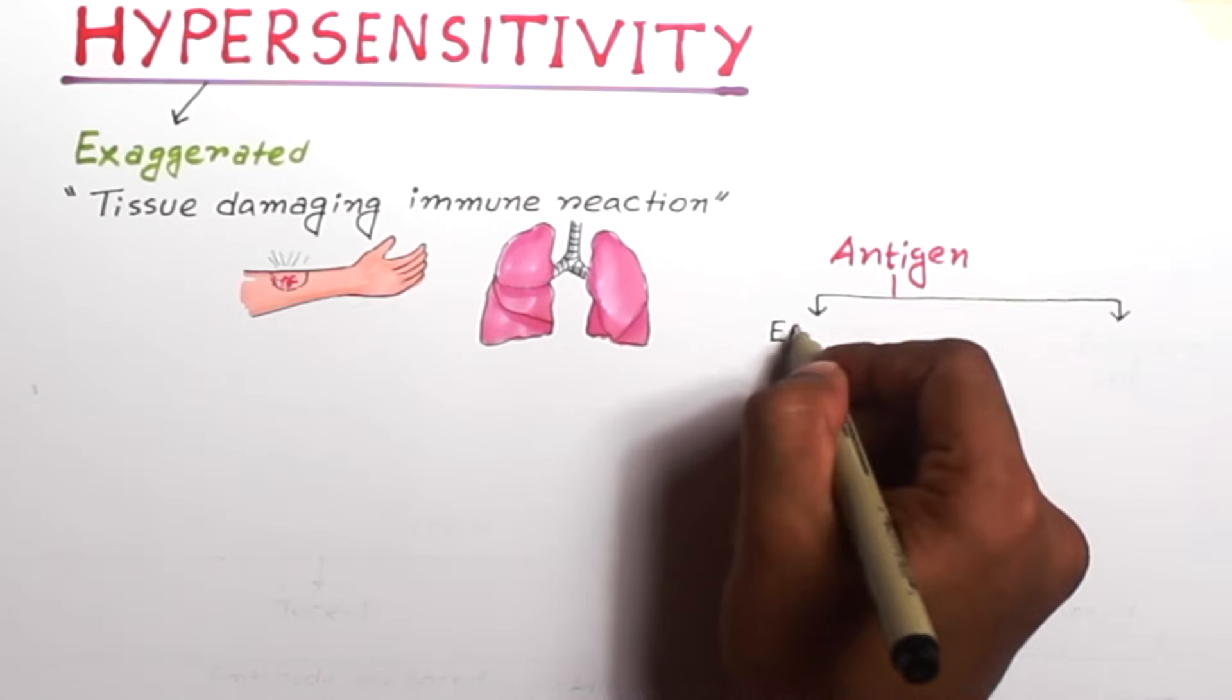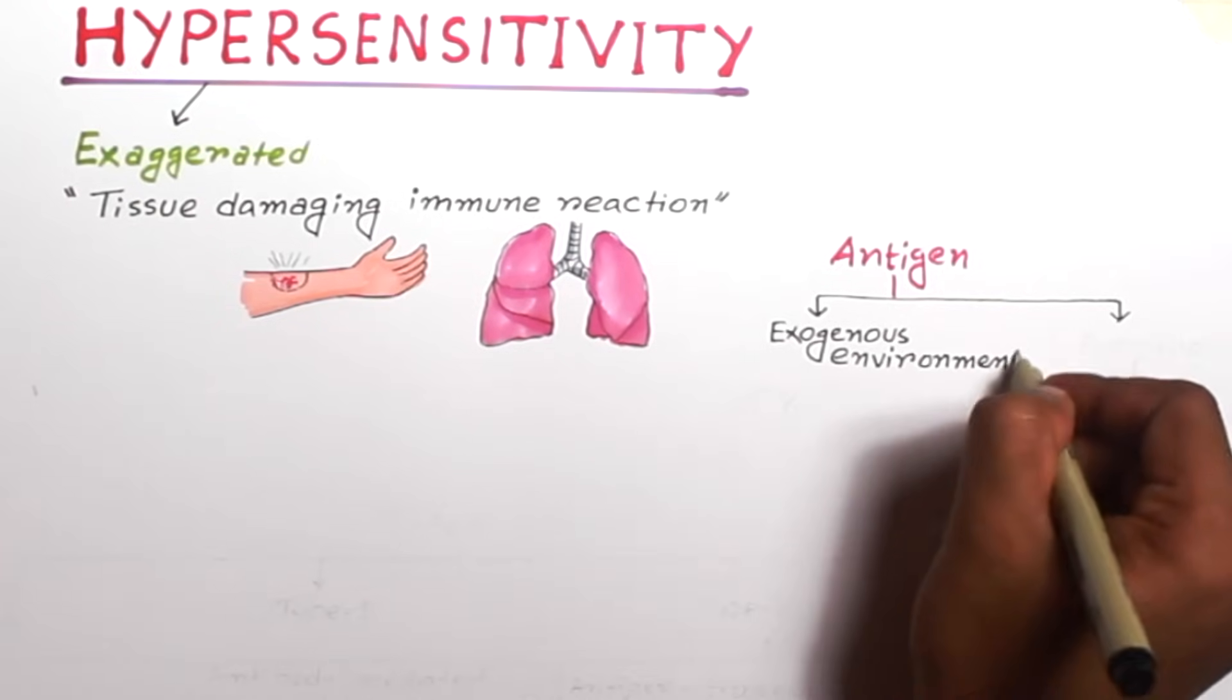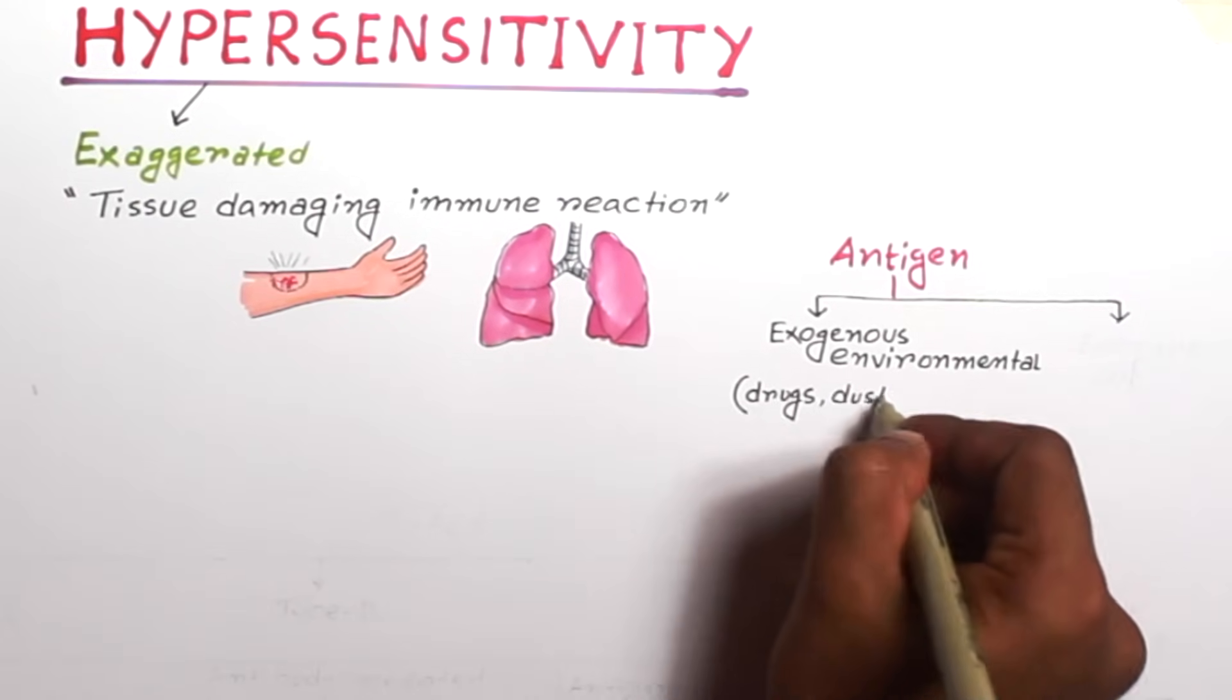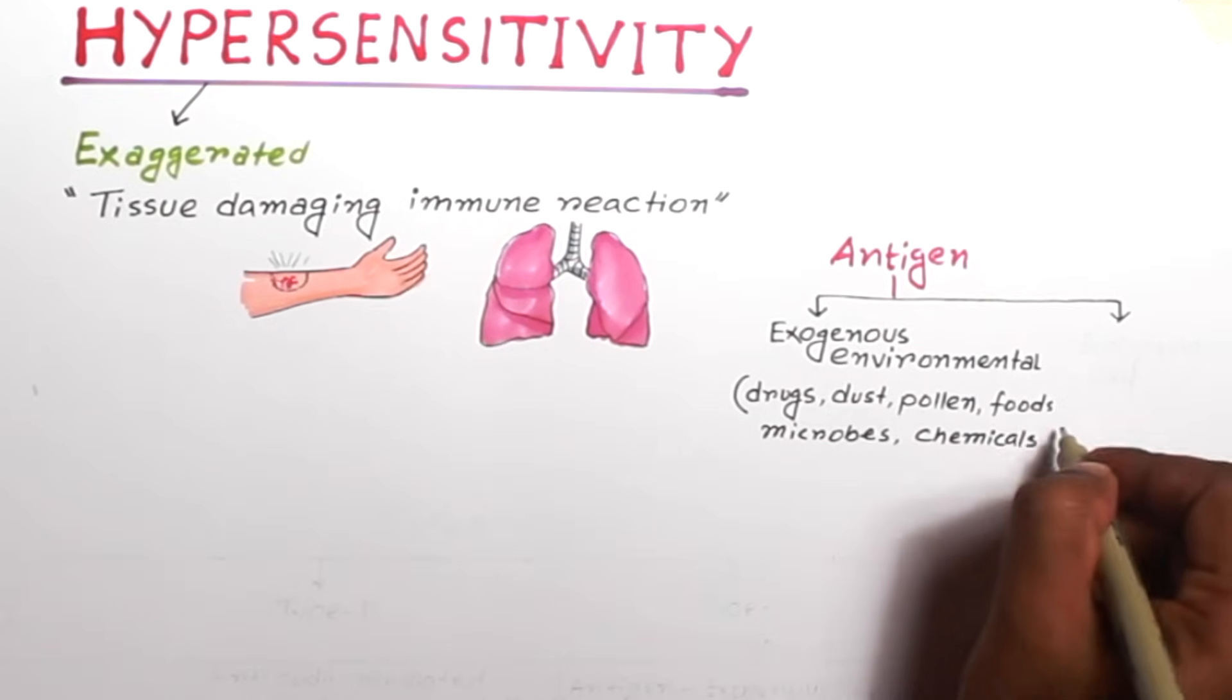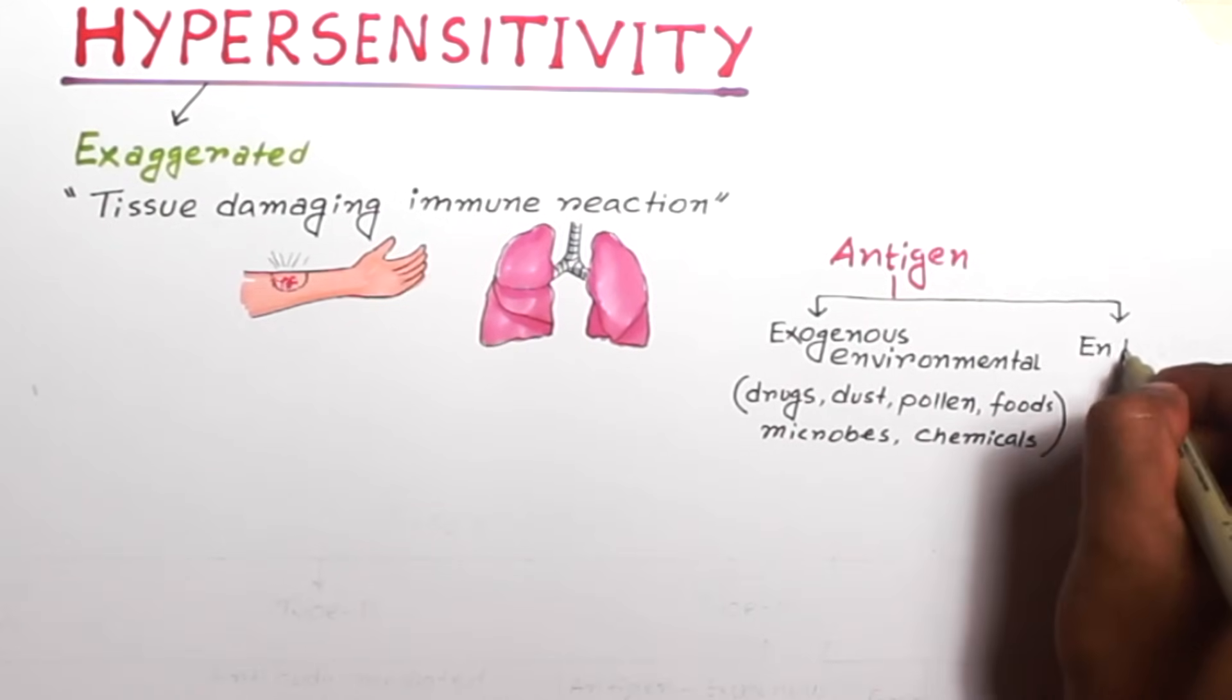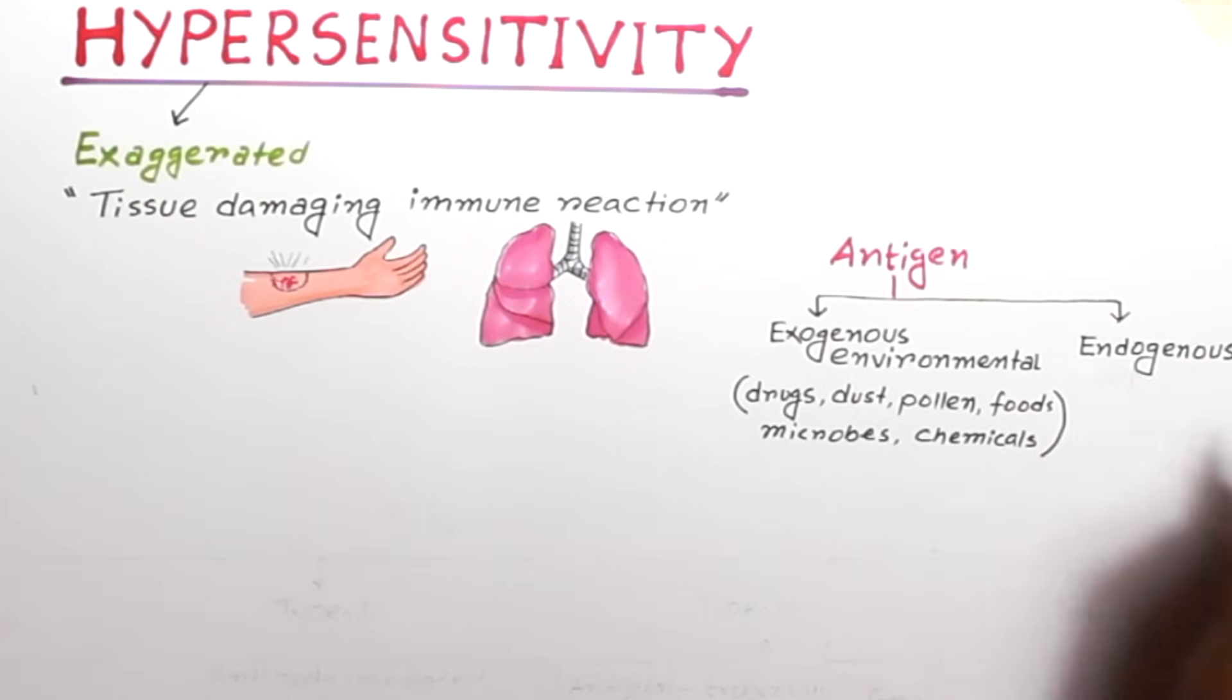Hypersensitivity reactions can be elicited by exogenous environmental antigens like drugs, dust, pollen, foods, microbes, and even various chemicals. Or it can be elicited by endogenous self-antigens.